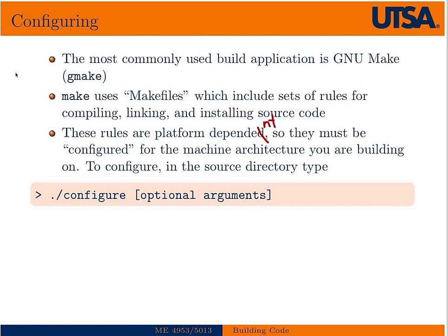These rules are typically platform dependent — they depend on the compilers and other things. So in order to first do that, they must be configured. This is not the case in every single piece of open source software, but a vast majority still use this configure, make, make install system. There should be a script in the root of the source directory you download called configure. If it's not there, it probably uses some other build system. But I would still say the vast majority of all open source systems use this configure setup.